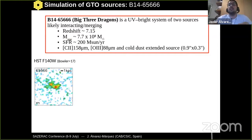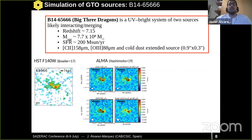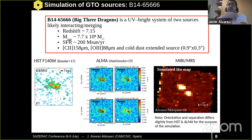The first example is B3DRAGON B14, a UV-bright system of two sources that are likely interacting or merging. This galaxy is at redshift 7.15, has a star formation rate of close to 200 solar masses per year, and a stellar mass close to 7.7 to 8 times 10^8 solar masses. It has been detected in infrared emission lines [OIII] and also in dust emission. Here is the simulated H-alpha map of this galaxy using MIRISim with a 40 kilosecond observation, published in Alvarez-Marquez 2019.